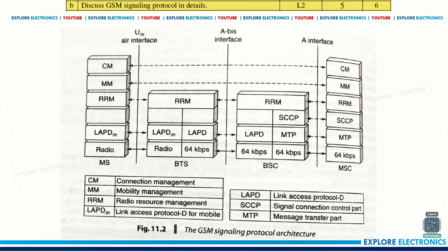Then discuss GSM signaling protocol in detail. The diagram shows the mobile station, BTS, BSC, and MSC with their components. The question asks what the interface is between these components and how the signaling process happens in GSM. You need to explain the functionality of MSC, BSC, BTS, and MS with respect to the communication between them.